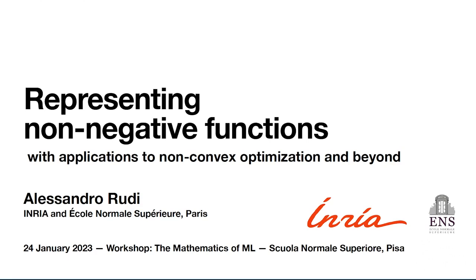So what we'll talk about today is representing non-negative functions. What we've worked on in the last few years in my group in Paris with Francis Bach and other colleagues is a way to represent non-negative functions that is not only very elegant from a mathematical viewpoint, but allows us to bring the same benefits that linear models — like kernel methods or shallow neural networks — bring to fields like interpolation, approximation, quadrature, and machine learning, and extend them to non-convex optimization, optimal transport, probability representation, and inference.